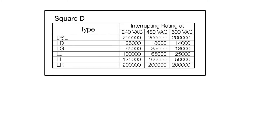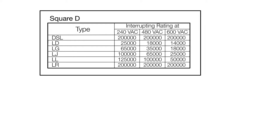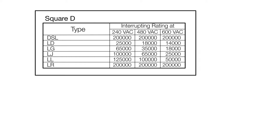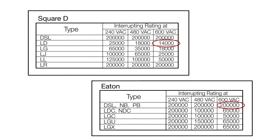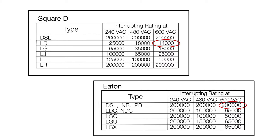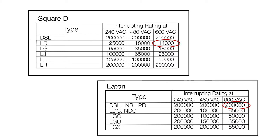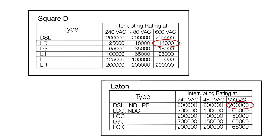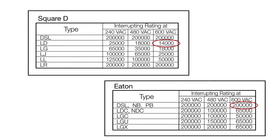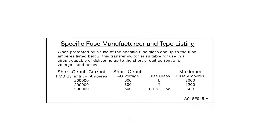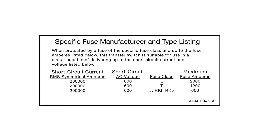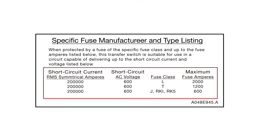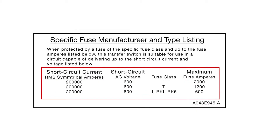As we can see from this label, this 800-amp transfer switch has several different WCRs — anywhere from 14,000 amps to 200,000 amps, depending on how long it takes for the specific breaker to clear the fault. The faster the fault is cleared, the higher the WCR. A specific fuse can also be used to protect the same transfer switch. When protected with the appropriate fuse class, the WCR is 200,000 amps.